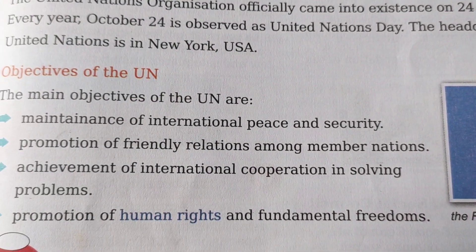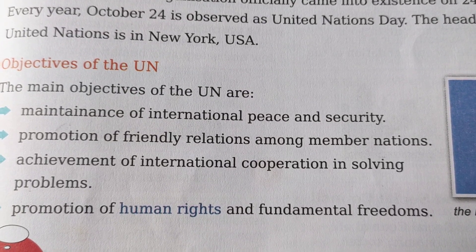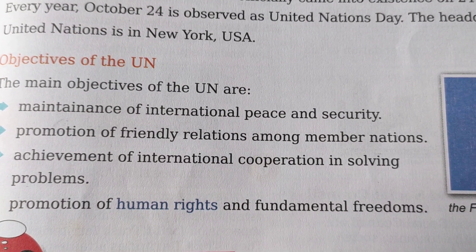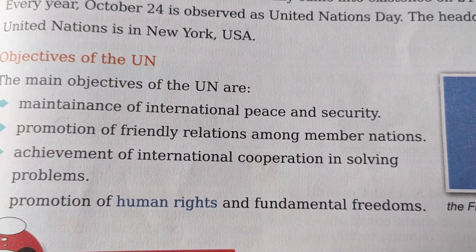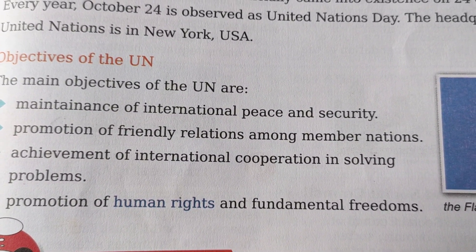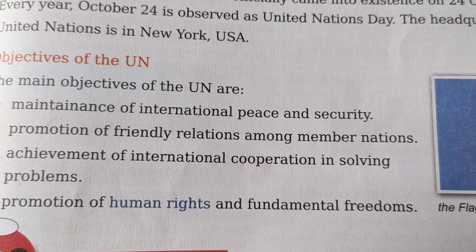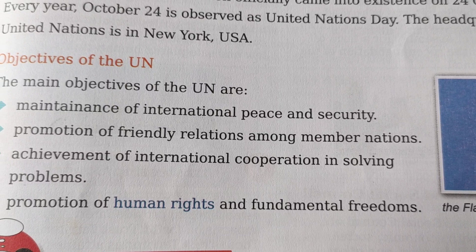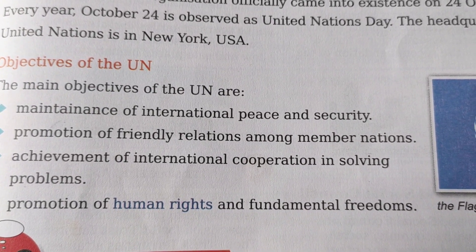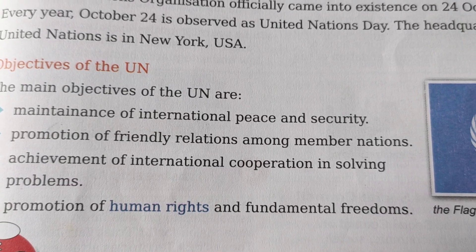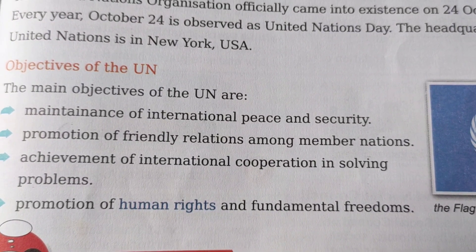There are some main objectives of the UN. The first is maintenance of international peace and security — their work is to maintain peace and security throughout the world and stop any type of war. The second is promotion of friendly relations among member nations, meaning all members of the United Nations should have very friendly relations with one another.